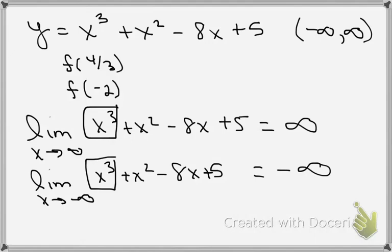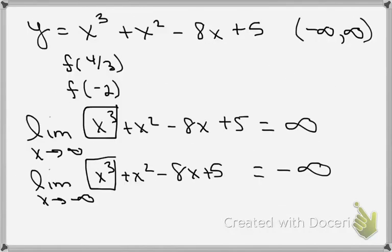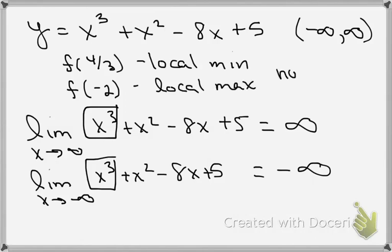So all I have are, at four thirds I believe that was our local min. So this is a local min and this is a local max, and there are no absolute extrema. So we have a location.